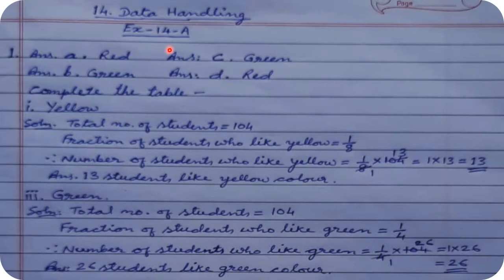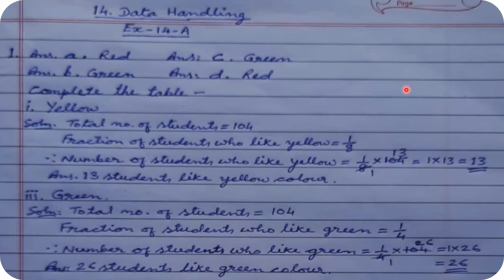The question is in your textbook — refer to it and read it well, then observe the pie chart. The pie chart shows the favorite colors of 104 students of class 5. The pie chart is divided into sections: half is occupied by red, one quarter by green, and the remaining quarter is divided into two equal parts — pink or purple and yellow.